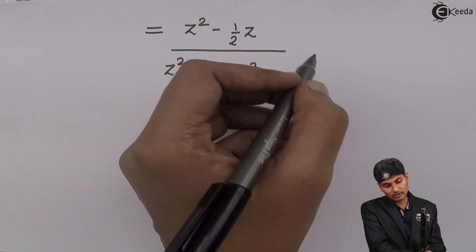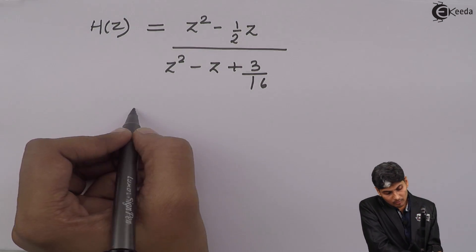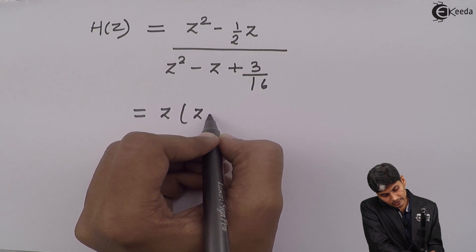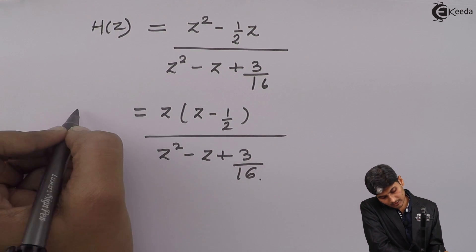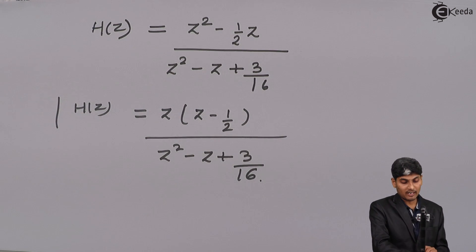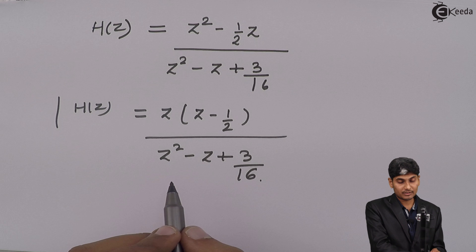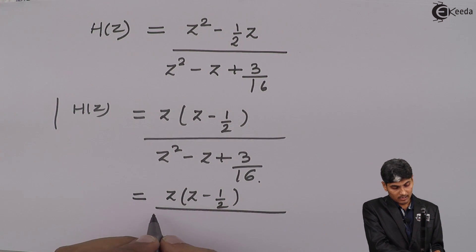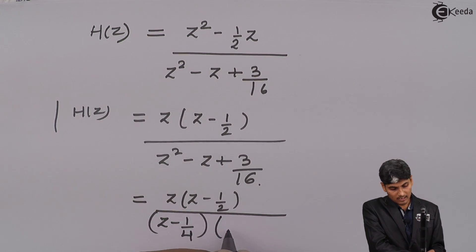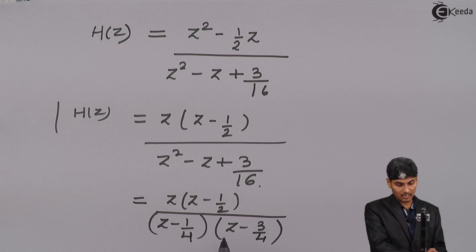Now this is an equation handled using normal mathematics. In the numerator we can write z(z - 1/2), and the denominator z² - z + 3/16. The denominator will have two roots because it is degree 2. Determining the two roots gives us (z - 1/4) and (z - 3/4).